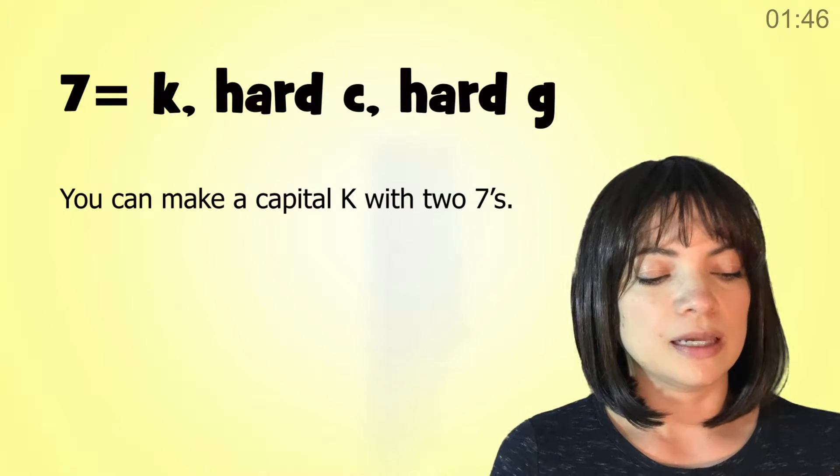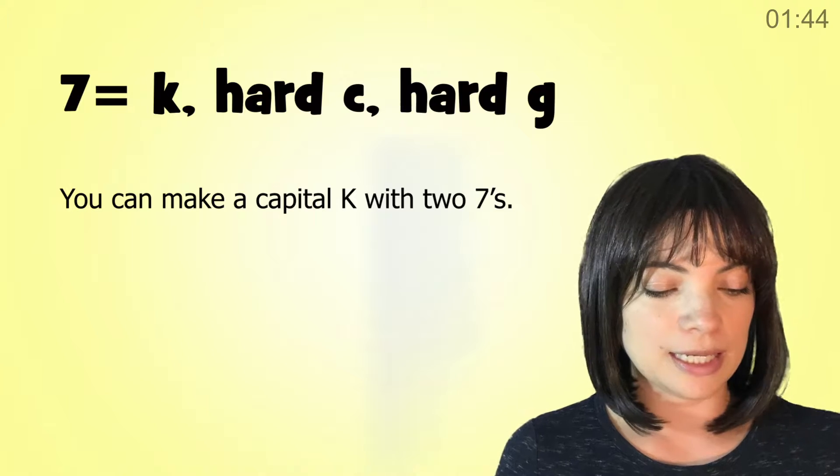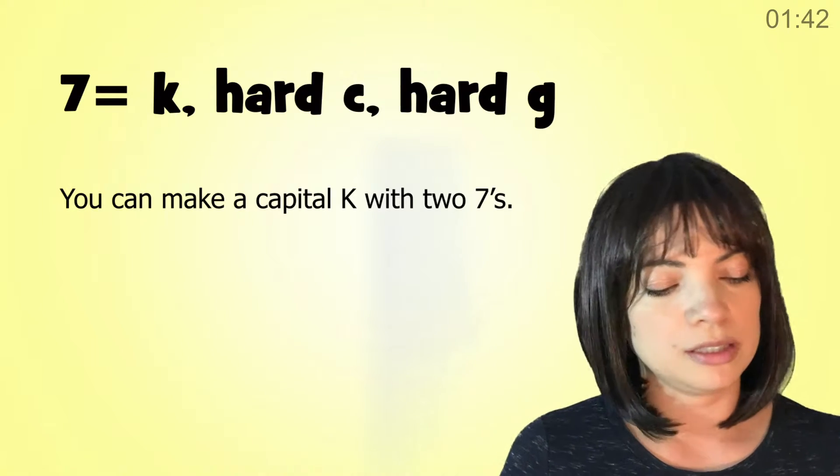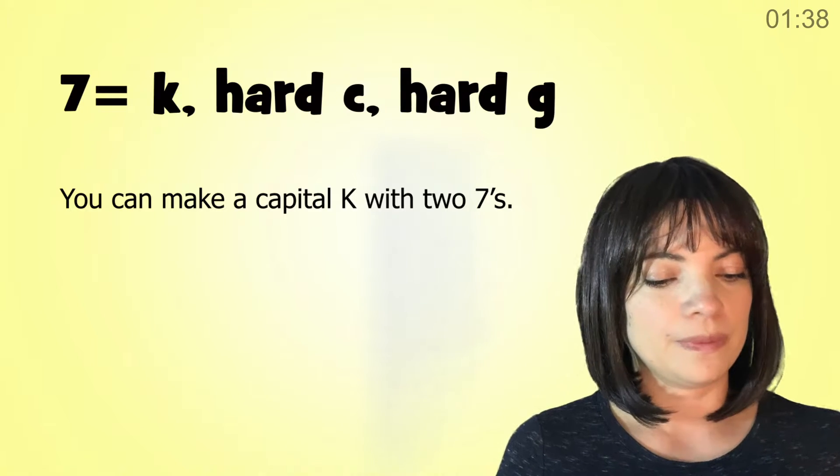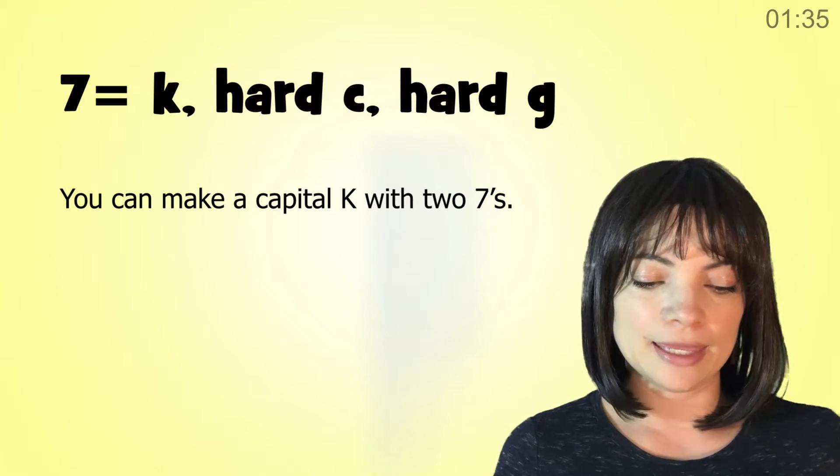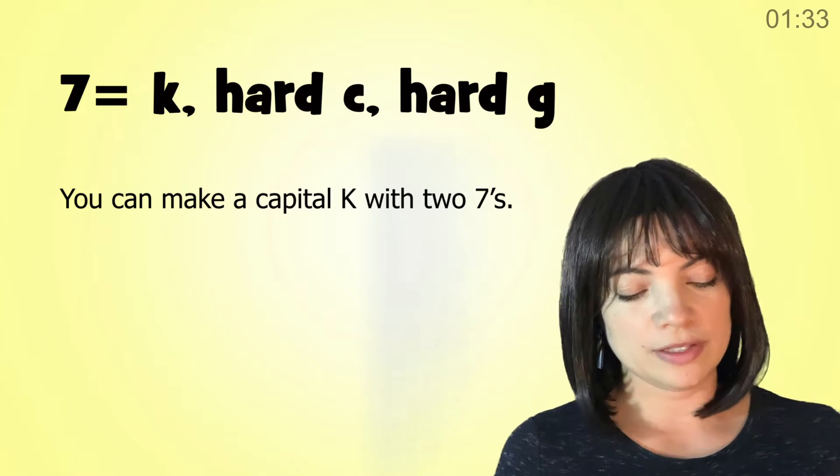Seven is k, hard c, and hard g. You can make a capital K with two sevens.